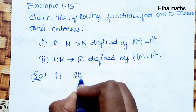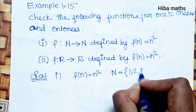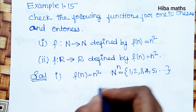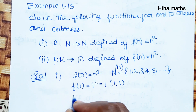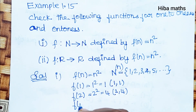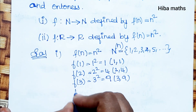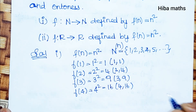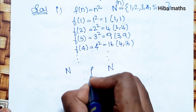For the first condition, f(n) = n² where n belongs to natural numbers: 1, 2, 3, 4, 5, and so on. Substituting natural number values: f(1) = 1² = 1, f(2) = 2² = 4, f(3) = 3² = 9, f(4) = 4² = 16, and it goes on.